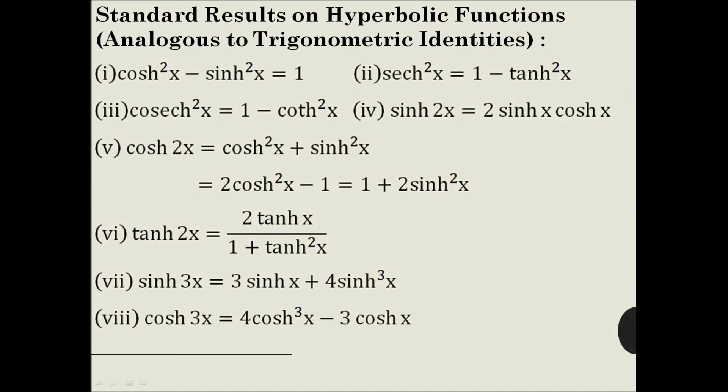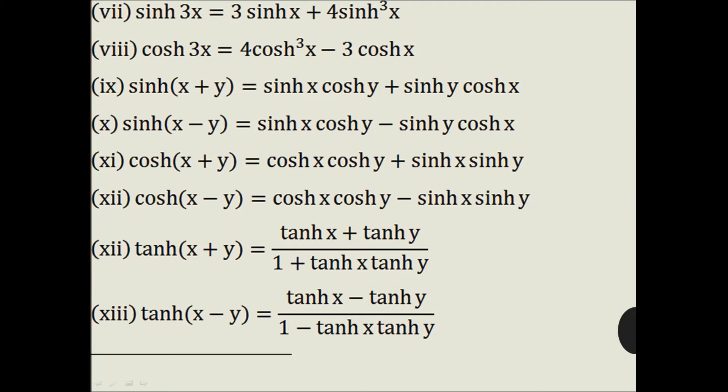Now these are standard results on hyperbolic functions which you will find analogous to trigonometric identities. Kindly make note of these because there is a small difference: cos²x + sin²x = 1, but cosh²x − sinh²x = 1. You will find these results useful while solving problems. These are the multiple angle formulae for hyperbolic functions.